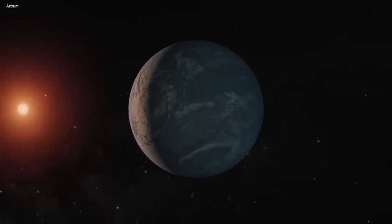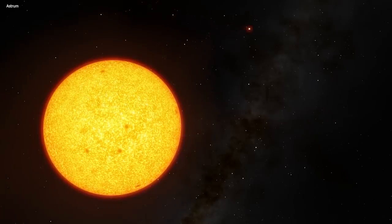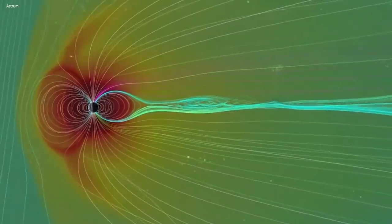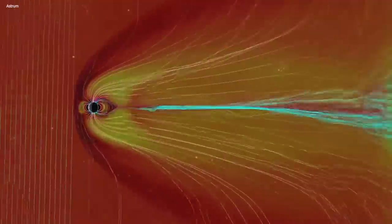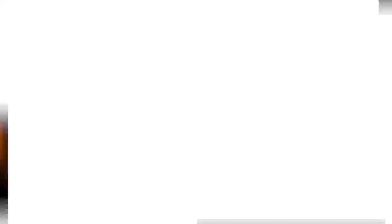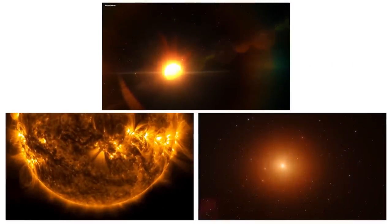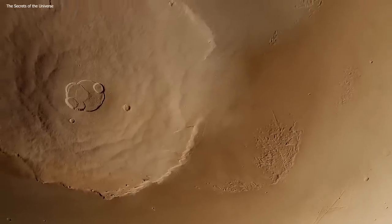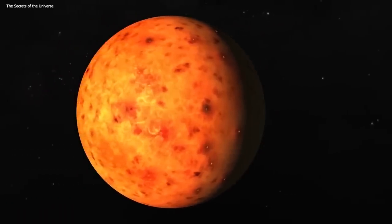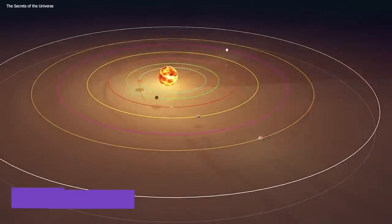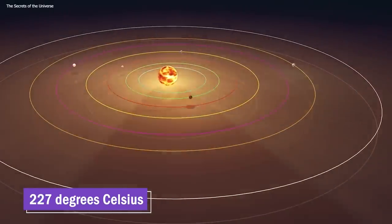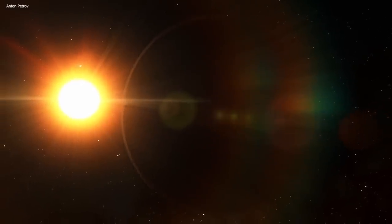Now this super-close orbit means that TRAPPIST-1b gets quite the suntan. It receives about four times as much radiation as Earth gets from the Sun. As a result, the planet is pretty toasty. If you were standing on the surface, which by the way, you really wouldn't want to do, the temperature would be around 227 degrees Celsius or 440 degrees Fahrenheit.